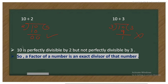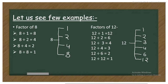So we can say that a factor of a number is an exact divisor of that number. Let us understand factors with the following examples. To find factors of 8: 8 divided by 1 is 8, divided by 2 is 4, divided by 4 is 2, divided by 8 is 1. So the factors of 8 are 1, 2, 4, and 8.